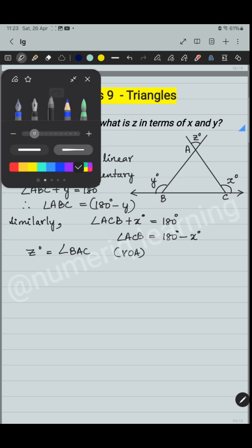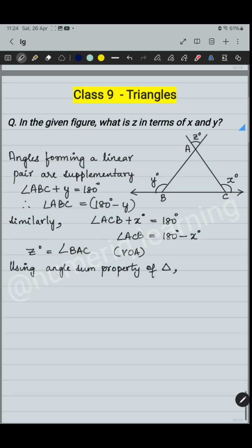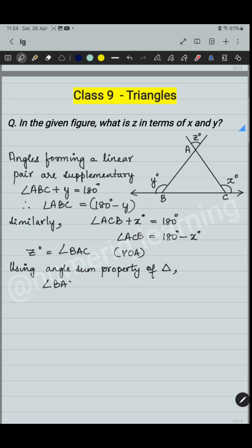Now we have got all the three angles. Using the angle sum property of the triangle, we can write that all three angles within the triangle are equal to 180 degree, which is angle BAC plus angle ABC plus angle ACB equals 180 degree.